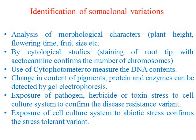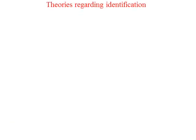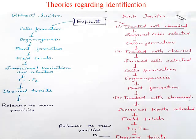We have two theories regarding identification: without in vitro technique (shown in blue) and with in vitro technique (shown in red). Without in vitro technique: you take one plant into the lab and grow it. You will have callus formation, then with the help of plant growth regulator, organogenesis takes place — shoot formation, root formation — and then you will have many plants.